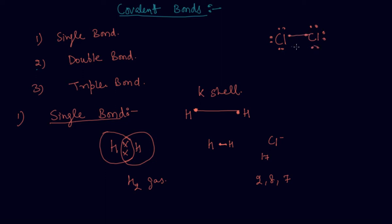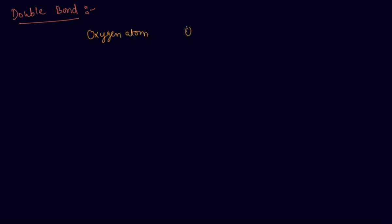These two electrons combine together to form a covalent single bond in Cl₂. Now let's discuss how a double bond is formed. Let's take the example of the oxygen atom — the atomic number of oxygen is eight.